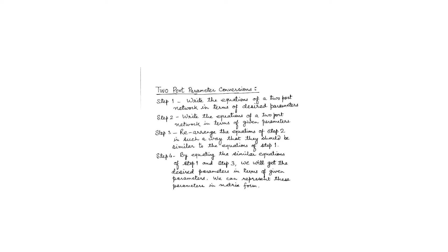Two-port parameter conversions. Step 1: we write the equations of a two-port network in terms of the desired parameters. If we want to convert Y to Z parameters, we first write the equations of Z parameters. If we want to convert Z to Y parameters, then the desired parameters will be Y parameters. In Step 2, we write the equations of a two-port network in terms of the given parameters — if given parameters are Y, we write Y parameter equations; if given parameters are Z, we write Z parameter equations.